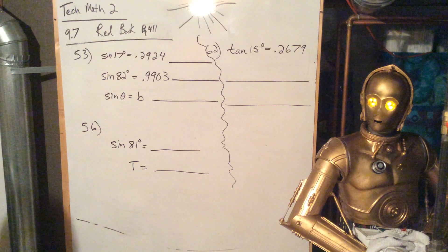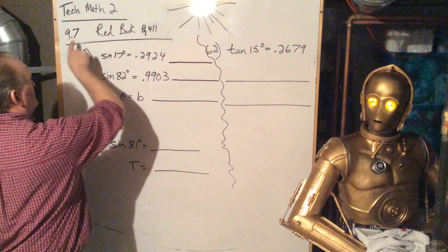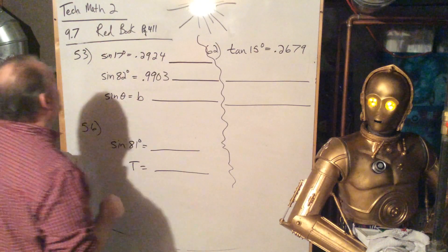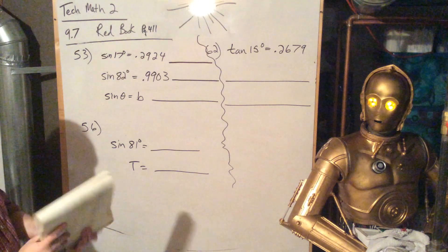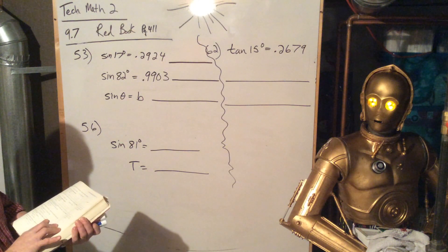Okay, we're in TechMath 2, Red Book, page 411, this is 9.7. We're taking a look at the arc sine, arc cosine, arc tangent.